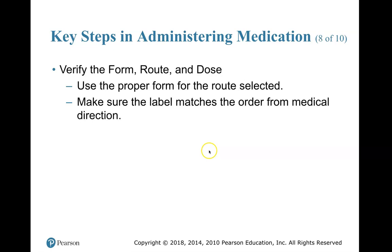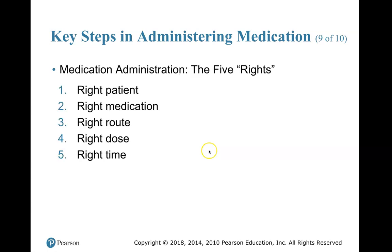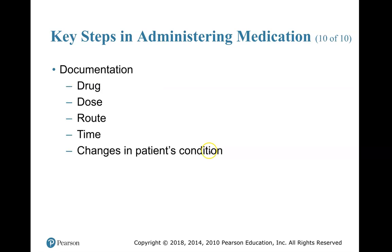Verify the form, route, and dose — use the proper form for the route you selected and make sure the label matches the order from medical direction. The five rights of medication administration are: the right patient, right medication, right route, right dose, and right time. You need to learn and memorize those.